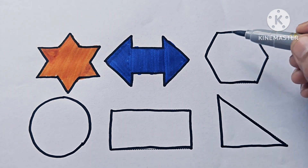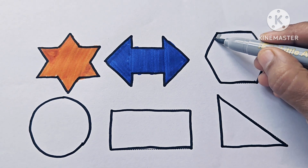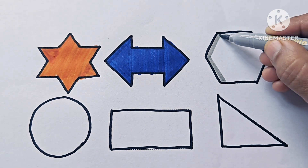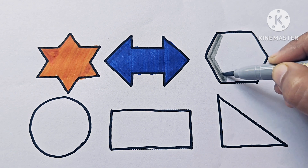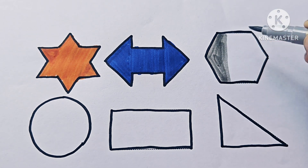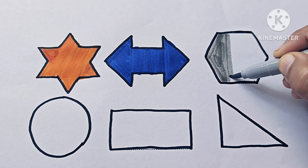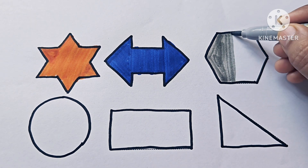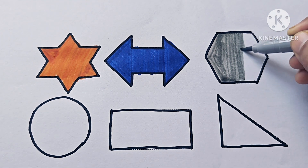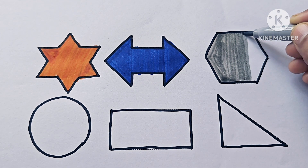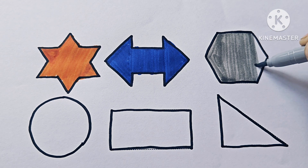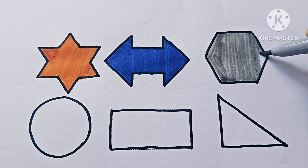This is gray color. This shape is a hexagon. Hexagon has six sides, six vertices, six angles. Hexa means six. Hexagon.